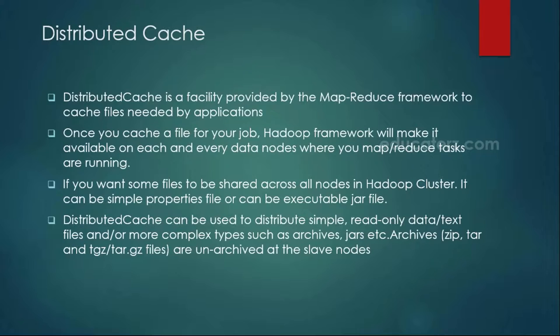What is distributed cache? The distributed cache is a mechanism to store all your smaller data sets into the main memory of each and every machine — the slave machine. It can be any simple read-only files like data files, text files, or even zip files and archive files. Any kind of file can be stored as part of your distributed caching, and you can use the distributed cache mechanism to store and process those files.